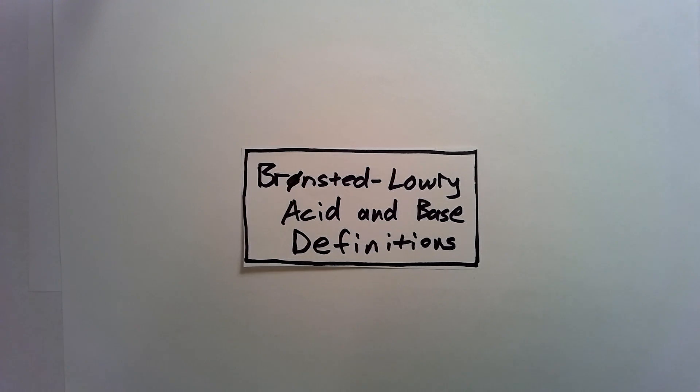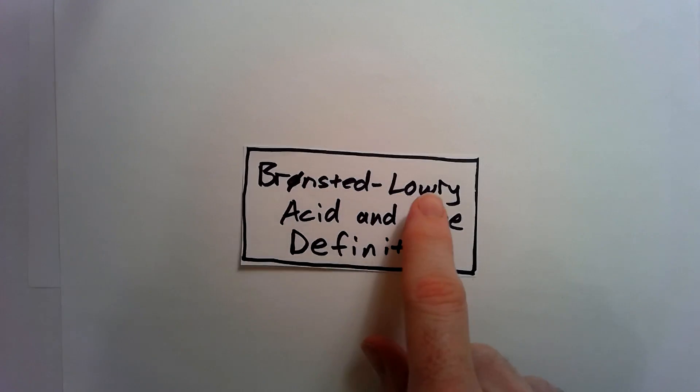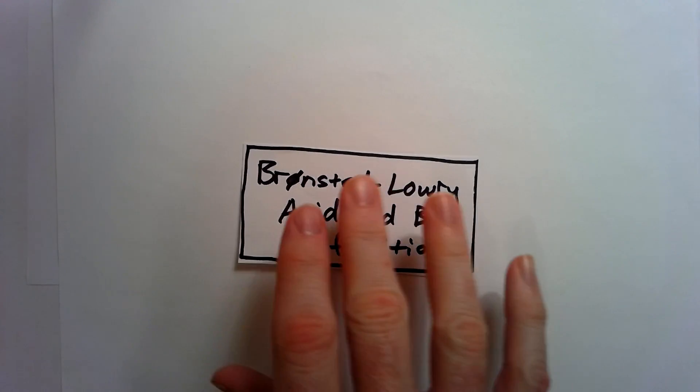Today we'll learn about Bronsted-Lowry acid and base definitions. Bronsted is a Danish chemist and Lowry was an English chemist, two people that never met each other and actually really did not like each other either.